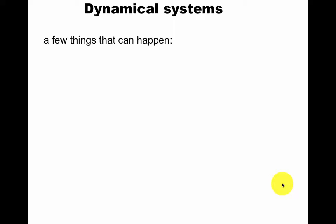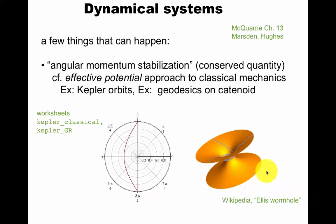So these are all dynamical systems, and we'll get back to some more examples later. First, a few things that can happen, just to illustrate what we mean by these qualitative features. You can have angular momentum stabilization of a dynamical system, meaning you have a conserved quantity, in this case angular momentum, which is something like mass times radius times velocity. This is very clear on the effective potential approach to classical mechanics, such as the Kepler orbits.